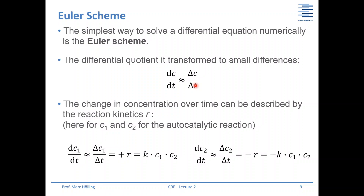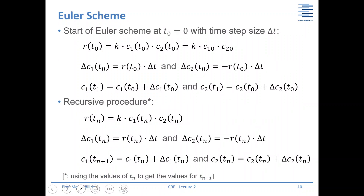You relate this concentration change to the reaction rate. For component 1, the concentration is increasing, so it's plus R, where R = k·C1·C2. For C2, it is decreasing — it is consumed — so it correlates with minus R, which is minus k·C1·C2. The idea is that the change in concentration is linked to the reaction rate multiplied by the time step.